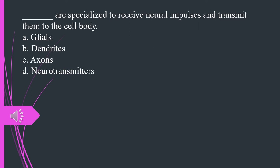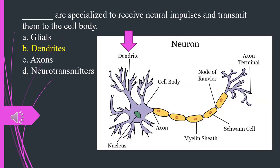What cells are specialized to receive neural impulses and transmit them to the cell body? A. Glial cells. B. Dendrites. C. Axons. D. Neurotransmitters. The answer is B. Dendrites.